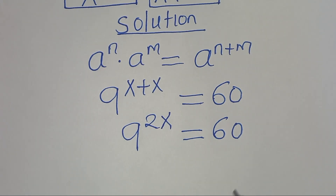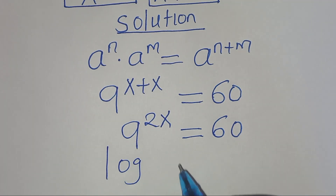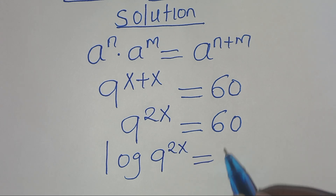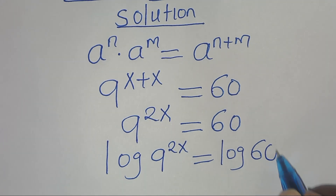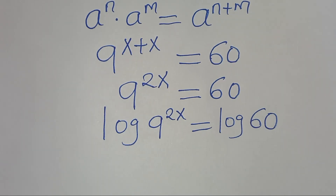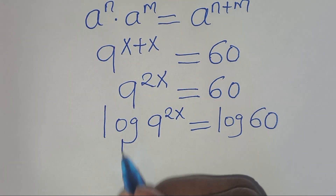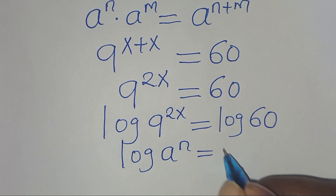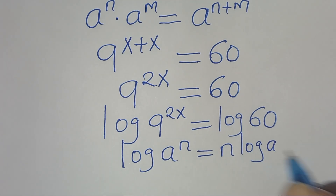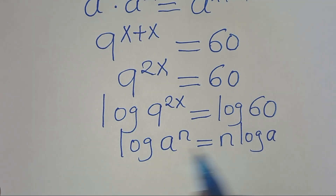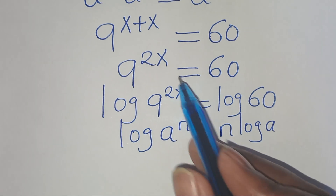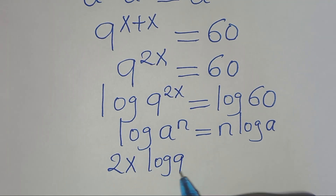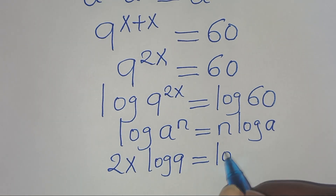To solve for x here, we introduce logarithm on both sides, that is log 9 to the power of 2x, this is equal to log 60. And we find that log 9 to the power of 2x is in the form of log a to the power of n, which can be expressed as n·log a. Applying this power property of logarithm, log 9 to the power of 2x becomes 2x·log 9, and this is equal to log 60.